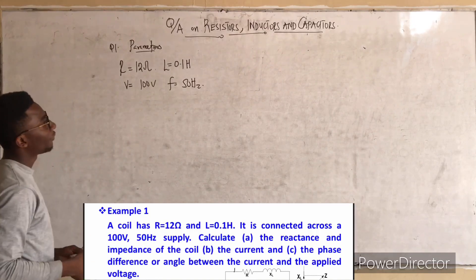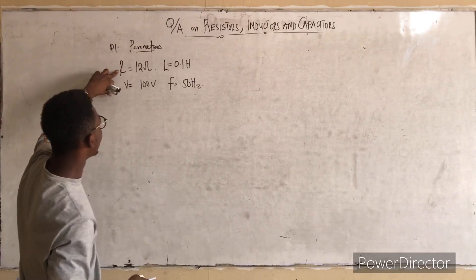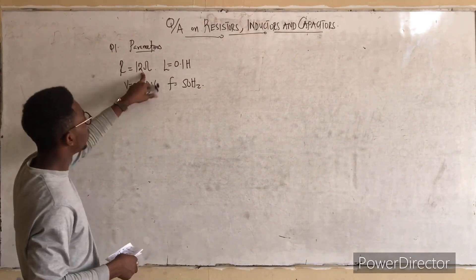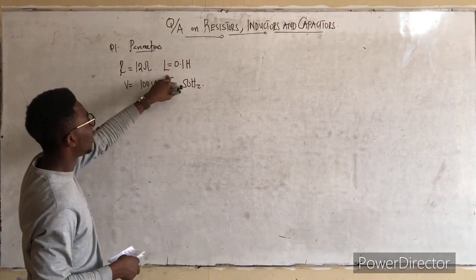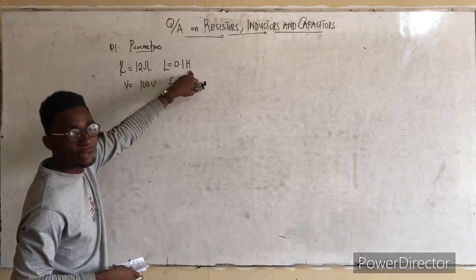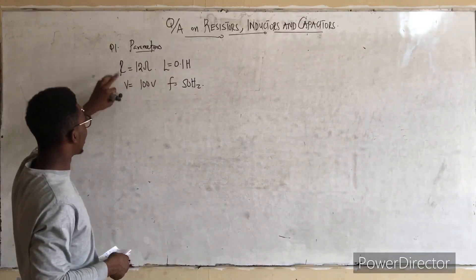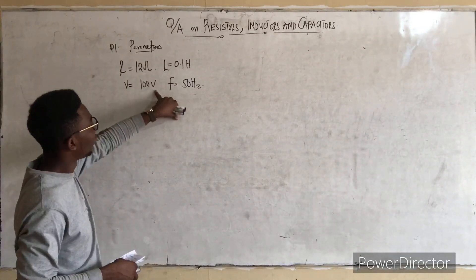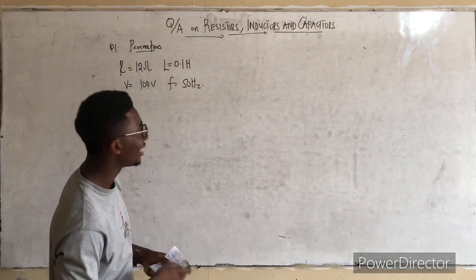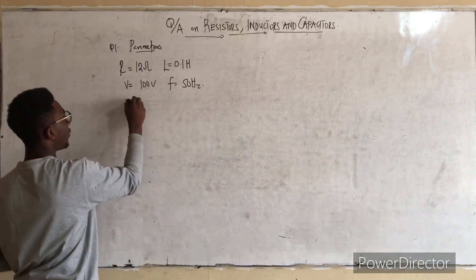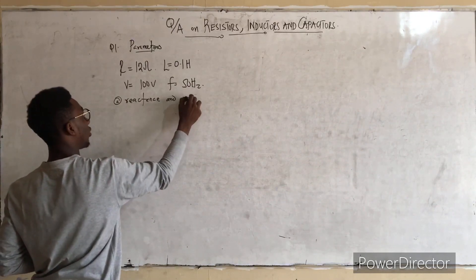Starting from the first question, the parameters we can extract are: the resistance R = 12 ohms, the inductor L = 0.1 henry, the voltage = 100 volts, and the frequency = 50 Hz. The question asks us to find the reactance and the impedance of the coil.